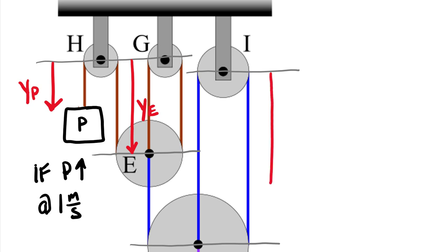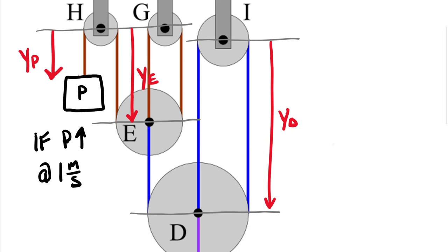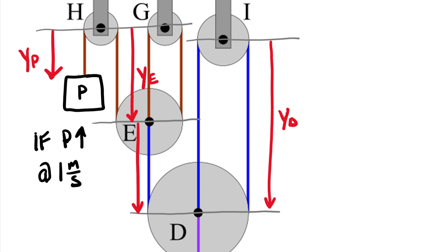Another distance between the center of I down to D, call this YD. Then we have one more distance. We also need a distance from E down to D.